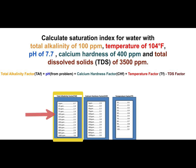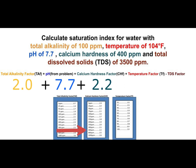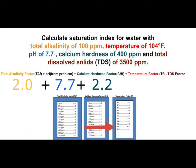Total alkalinity is 100 ppm — go to the total alkalinity factor box, find 100, and use 2.0. Plus pH from the problem: 7.7, write that in. Plus calcium hardness of 400 ppm — go to the calcium hardness box, find 400, and put in 2.2. Plus temperature factor: our temperature is 104 degrees. In the temperature factor box, you're between 94 and 105. You always bump up on your factor, so use 105, which gives a factor of 0.9.